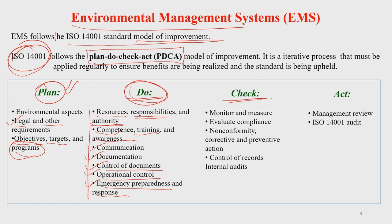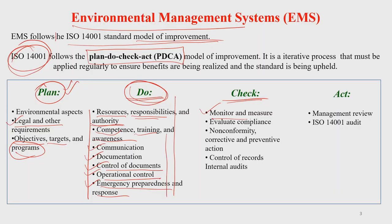Then comes the Check step. Once you carry out the set of activities, you check your system through continuous monitoring, evaluation, and measurement. You try to find any non-conformity, take corrective actions and preventive measures, control records, and conduct internal audits. These are the important aspects under the Check step of the PDCA model.